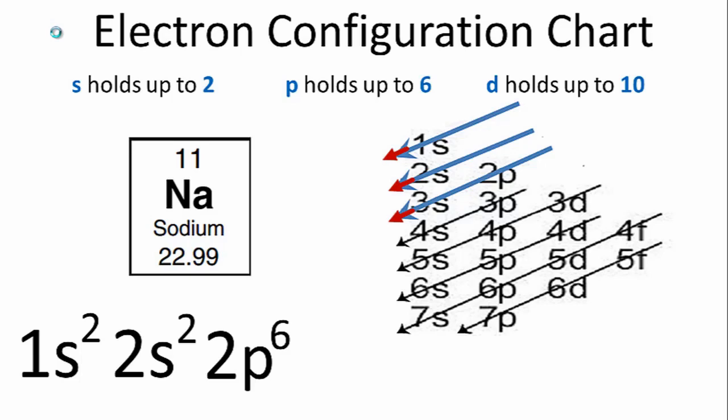Sodium only has 11 electrons, so we're almost there. After the 2p, you can see the 3s term in the third row on our chart. So we only need to put 1 electron in the 3s.